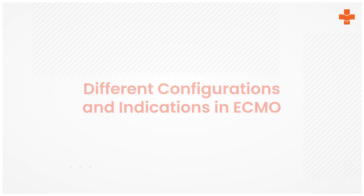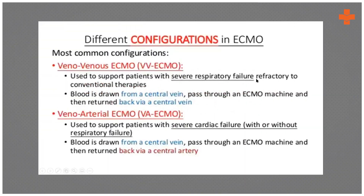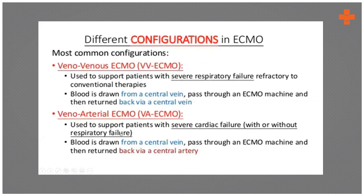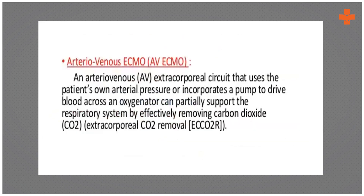VV-ECMO is used to support patients with severe respiratory failure refractory to conventional therapies. The blood is drawn from the central vein, passed through an ECMO machine, and returned to the central vein. VA-ECMO is used to support patients with cardiac failure, with or without respiratory failure. For ARDS, swine flu, COVID, or severe pneumonia refractory to standard therapy, you use VV-ECMO. For cardiogenic shock, post-MI, post-thoracotomy, or post-cardiac arrest, you often need VA-ECMO.